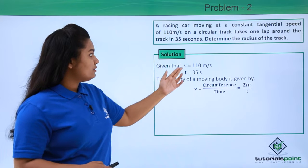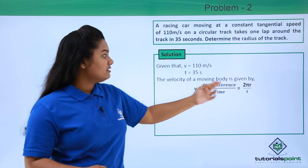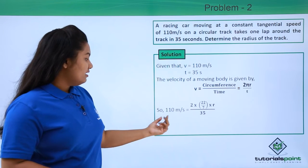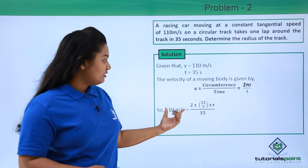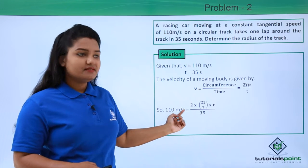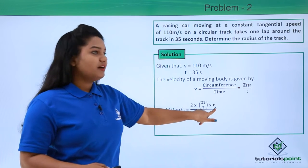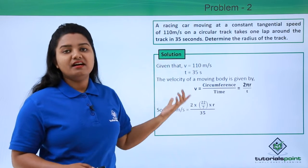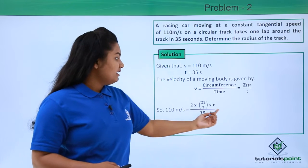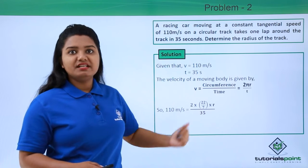So let us go ahead and substitute the values of velocity and time in this expression. Here we have 110 meters per second equals 2 multiplied by π, which is 22 by 7, multiplied by r, which is the radius, that is the unknown quantity, divided by the time which is 35 seconds.